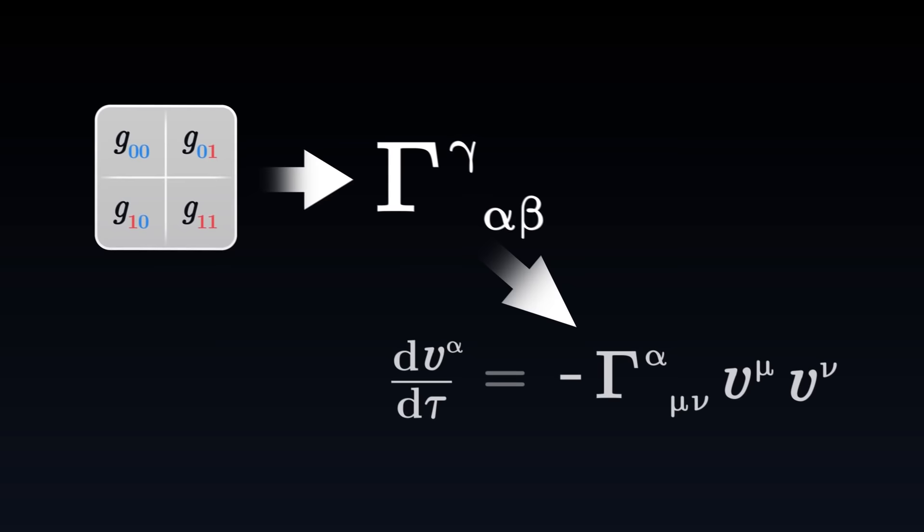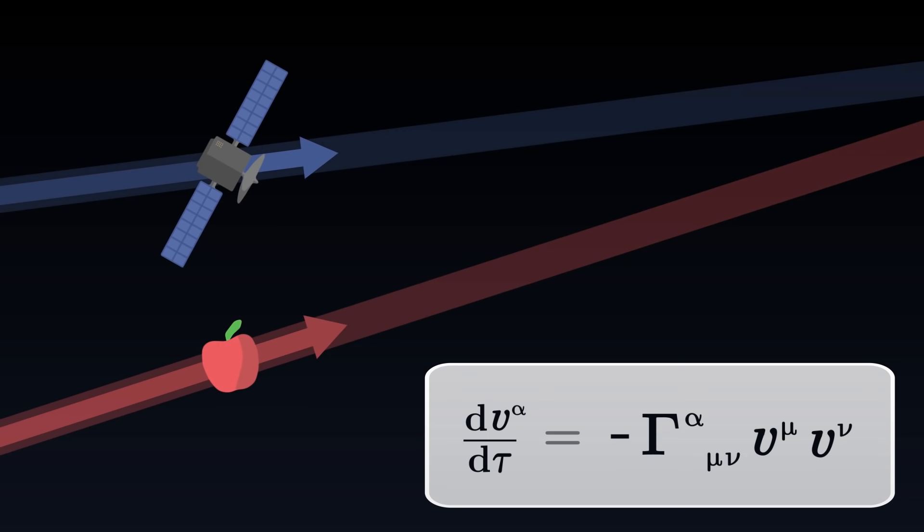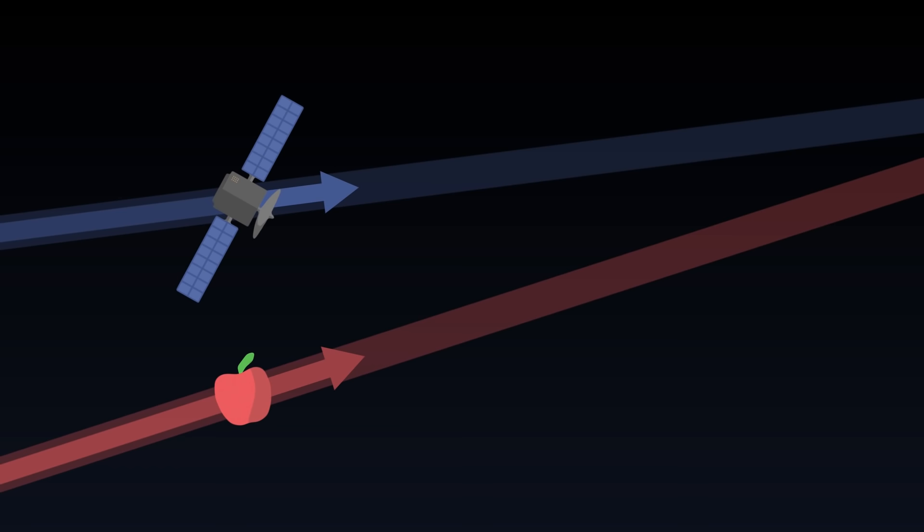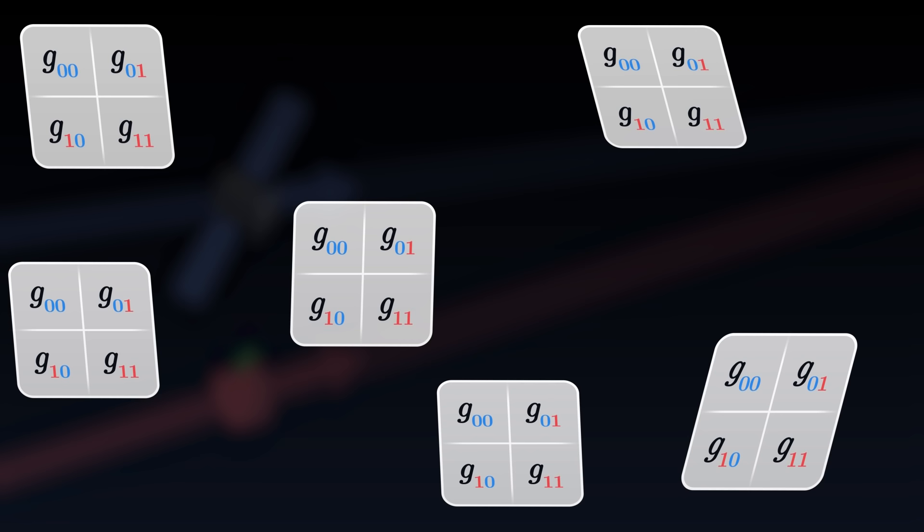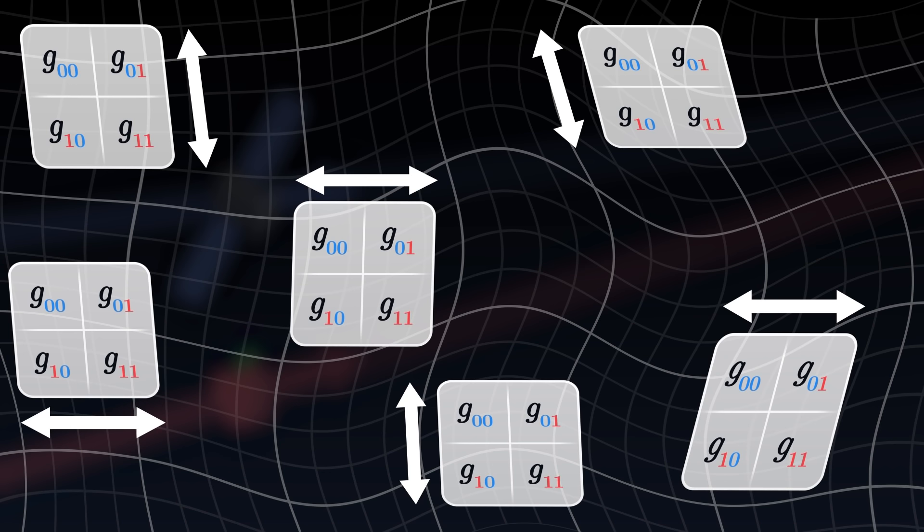Supposing that we know the metric tensor, we can now calculate the Christoffel symbols, and using them in the geodesic equation, we are able to predict the trajectories of objects in the universe. Basically, we have a method to describe the movement of a free body depending only on the geometry of space-time. The geometry of space-time is embodied by the metric tensor, which alone describes the relationships between real distances and our coordinates.